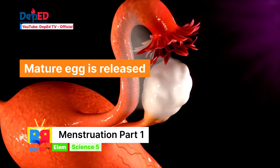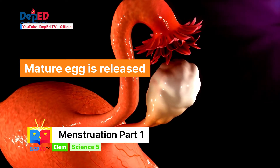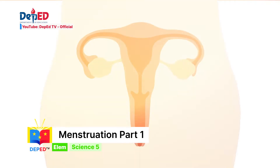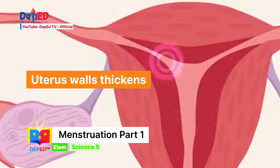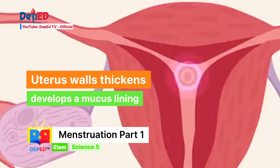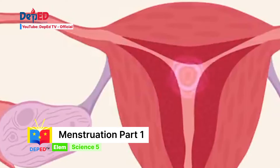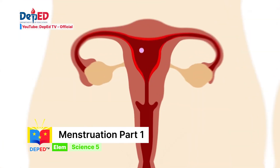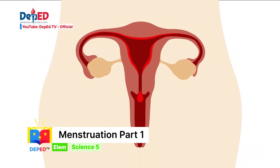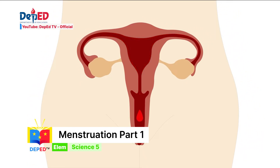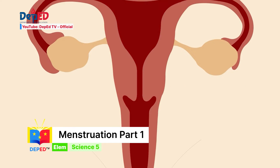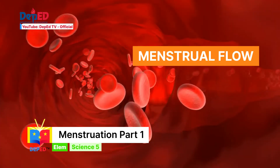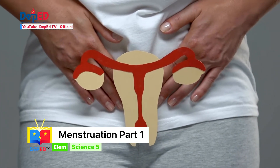Once a month, a mature egg is released in one of the ovaries of a female. Each time an egg matures, the wall of the uterus thickens and develops a mucous lining. This prepares the uterus for the coming of the egg to be fertilized. If the ripened egg is not fertilized because of the absence of the sperm, the egg dies. The wall of the uterus that has thickened breaks down and passes out in the form of blood, or the menstrual flow. This explains why women menstruate each month.